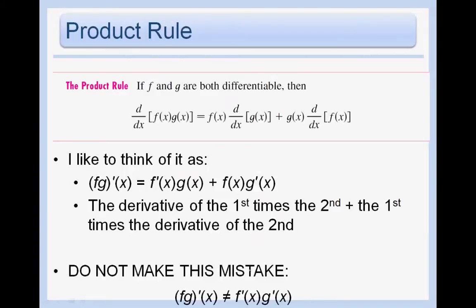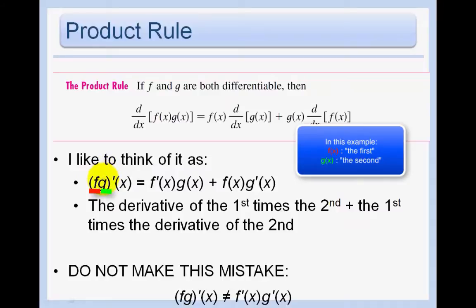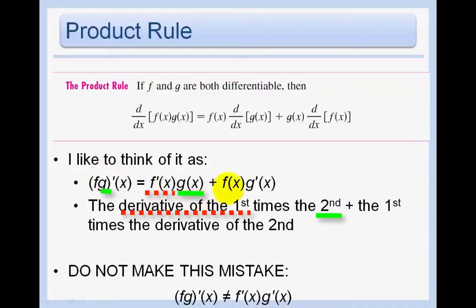The product rule says if f and g are both differentiable, then the derivative of f of x times g of x is given by this. Now, this is your book's definition. However, I like to think of it like this: the derivative of the first times the second — where f of x would be the first and g of x would be the second — plus the first times the derivative of the second.